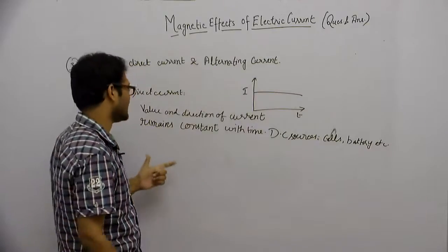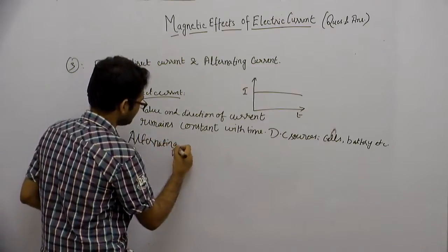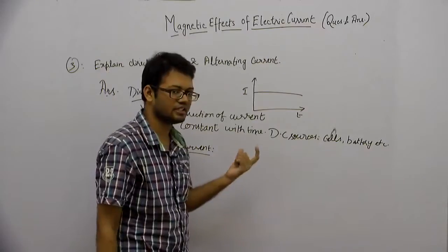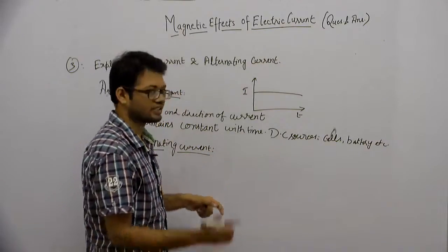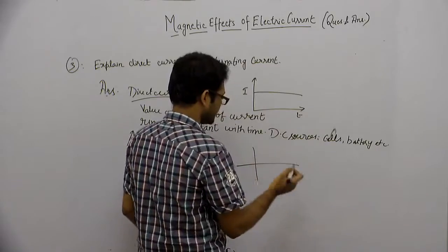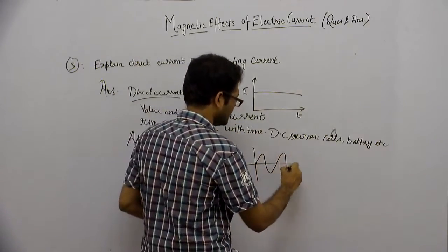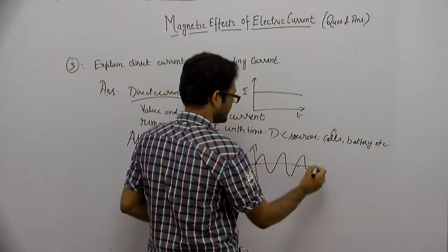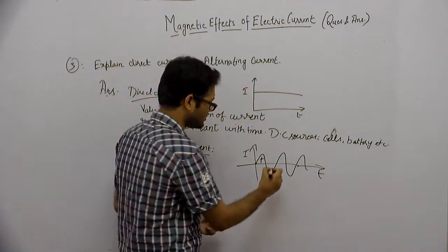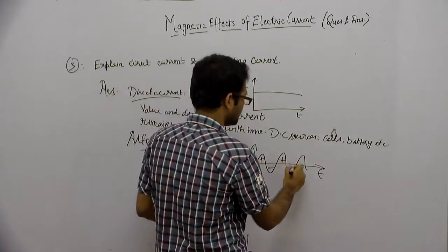Now we come to alternating current. Alternating current क्या होता है — कुछ समय के लिए plus direction में है आपका current, तो कुछ समय के लिए minus direction में है। और जो समय है वो fix है, तो periodically change हो रहा है — plus-minus, plus-minus, plus-minus।